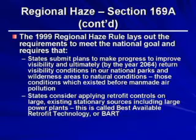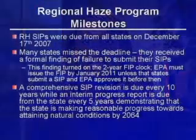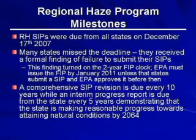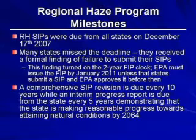This is called Best Available Retrofit Technology, or BART. The first round of Regional Haze SIPs were due from all states on December 17, 2007. Many states missed the deadline, and EPA issued formal findings of failure to submit SIPs to these states. This finding turned on the required two-year FIP clock. Therefore, EPA must issue FIPs for these states if they do not submit SIPs by January 2011. A comprehensive SIP revision is due every 10 years, while an interim progress report is due from each state every five years, demonstrating that the state is making reasonable progress toward attaining natural visibility conditions by 2064.